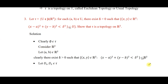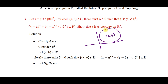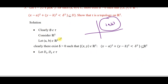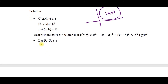The empty set clearly satisfies this condition, so ∅ ∈ τ. For the whole set ℝ²: take any element (A, B) — we can always find an open circle {(x,y) : (x−A)² + (y−B)² < δ²} which is a subset of ℝ². Therefore ℝ² belongs to τ, and the first condition is satisfied. Moving on to the second condition.